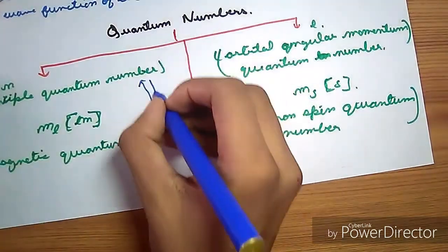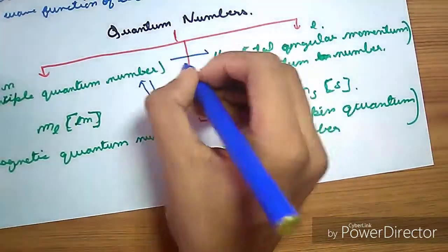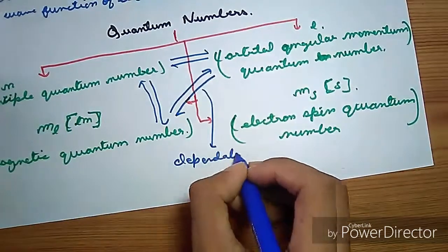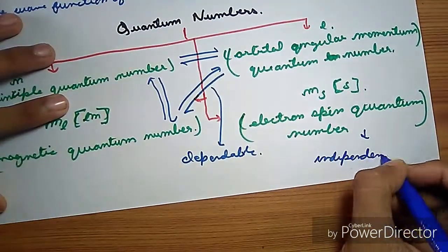M and L are dependent on each other, but S is independent.